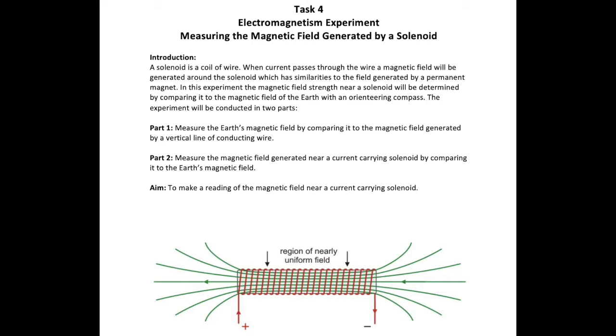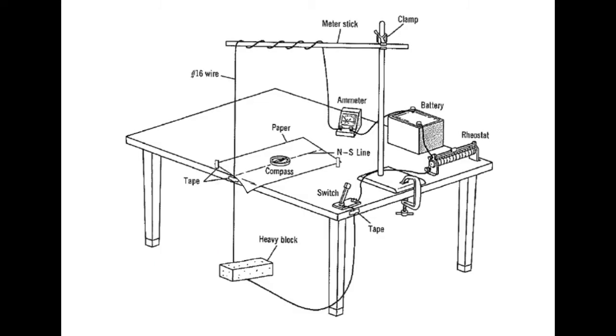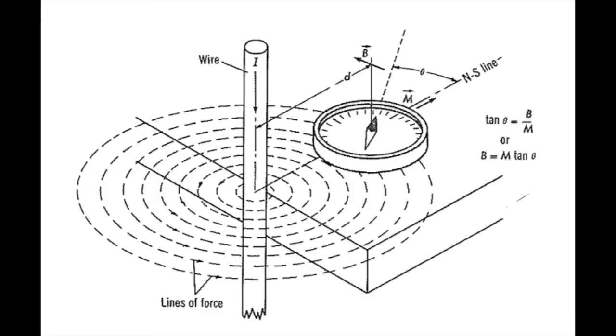In part one, I'm going to take a measurement of the Earth's magnetic field in our lab by comparing it to the known field of a current carrying conductor. The current carrying conductor generates a B field that is perpendicular to the Earth's field. So the amount of deflection reveals the relative strength of the wire's field compared to the Earth at any given point.